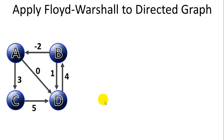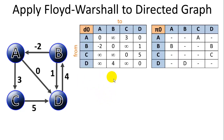Now let's apply Floyd-Warshall's algorithm to this directed graph. We have four vertices and six edges. We'll start by setting up a couple of tables. What we're going to find is the shortest distance from the vertex on the left column to the vertex on the top row — that's what each cell represents. The distance from any vertex to itself is always zero. We also track pi, the predecessor vertex.